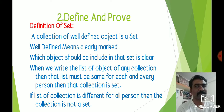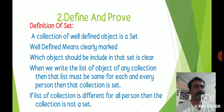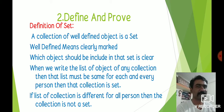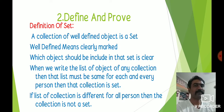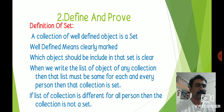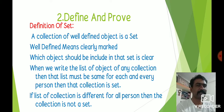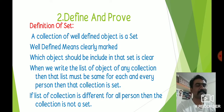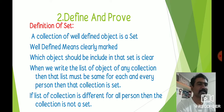With this observation, we can define the concept of set. A collection of well-defined objects is a set. 'Well defined' means clearly marked — which object should be included in that set is clear. When we write the list of objects of any collection, that list must be the same for each and every student; then that collection is said to be a set. If the list is different for all persons, then the collection is not a set.